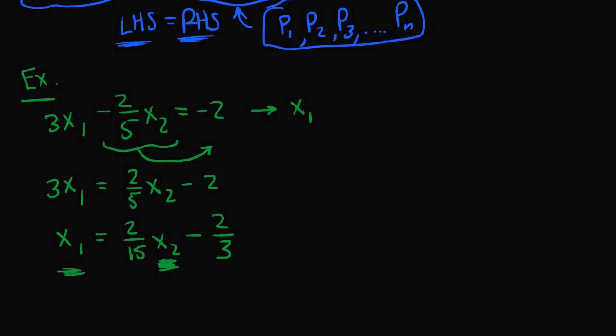So in this case, we call x₂, this variable right here, a free variable. That means that x₂ could be any value, and we would always satisfy this equation because we would get some value for x₁.